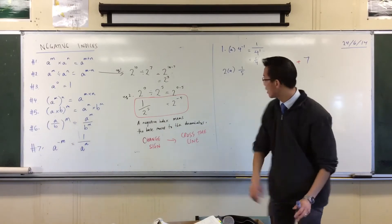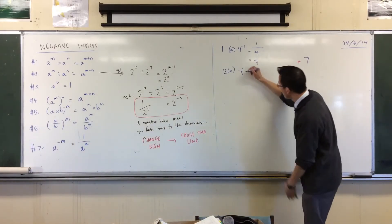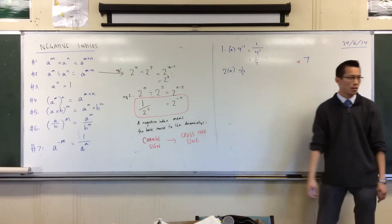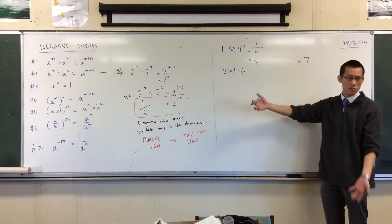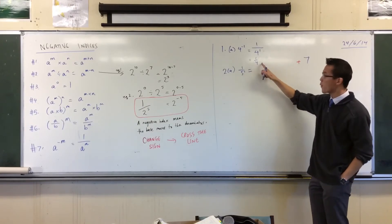Now in exactly the same way, when you don't see any index, you assume it's a 1. Because 5 times itself once is just 5. So now that I have an index there, I can go backwards.